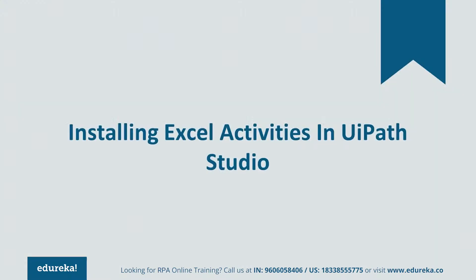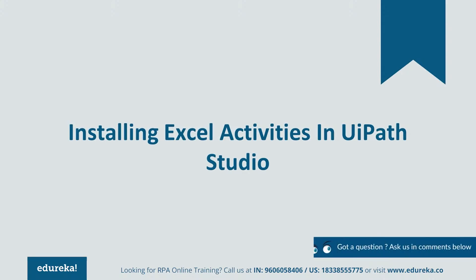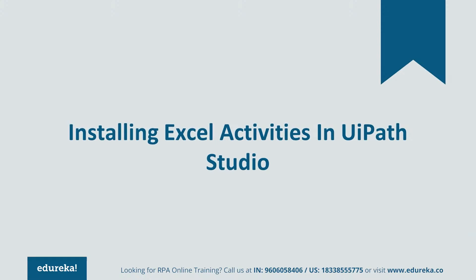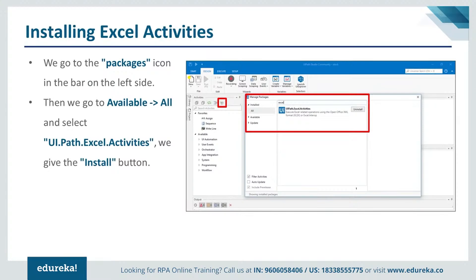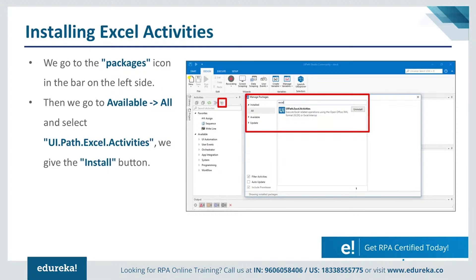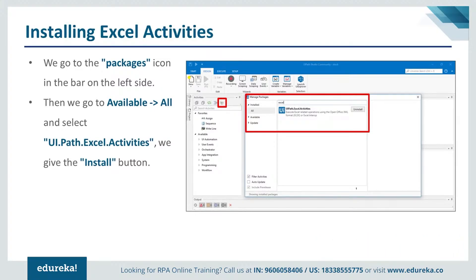How do we implement Excel automation? That is really simple — you just have to implement it by using a tool. Here we'll be using the UiPath tool to automate Excel activities. I'm assuming all of you are well versed with the UiPath interface, workflow, and passing variables between actions — these concepts will help you throughout this tutorial. We'll be using UiPath Studio, but first you have to install the Excel activities.